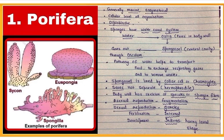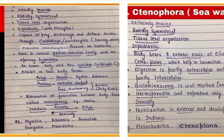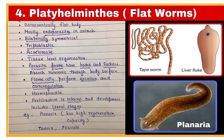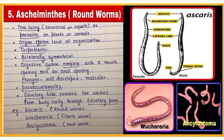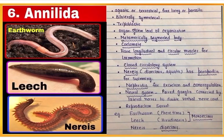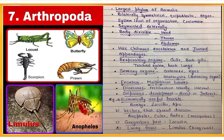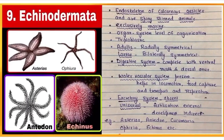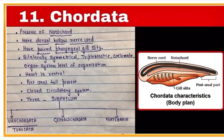Then Cnidaria, Ctenophora, Platyhelminthes (flatworms), Nematoda (roundworms), Annelida, Arthropoda, Mollusca, Echinodermata, Hemichordata, and Chordata.